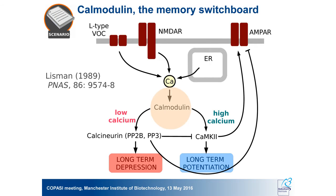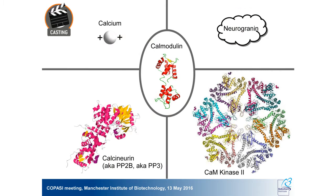So calmodulin is really the big decider of the direction of plasticity. My actors today are: calcium, which can bind calmodulin; calcium can also bind the regulatory subunit of calcineurin, protein phosphatase 2B. Protein phosphatase 2B is one of the targets of calmodulin; CaMKinase 2 is another target; and I will also talk about a third target called neurogranin, for which we don't have a 3D structure because it's a disordered protein in its natural state.